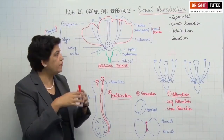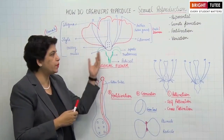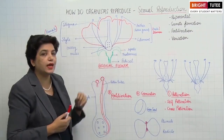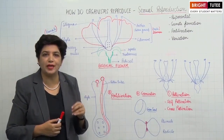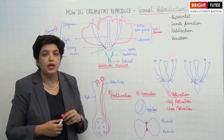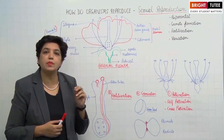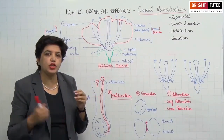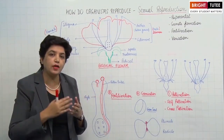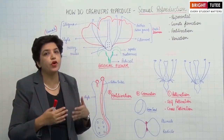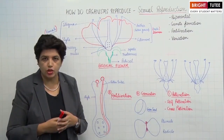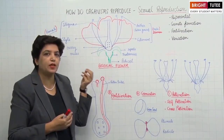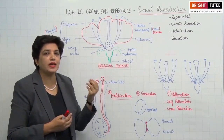The function of the sepal is to protect the flower during the bud stage, and when the flower blooms it gives support to other parts. The next layer is the colored part called the petal or corolla. These colored petals are sometimes fragrant, and their main function is to attract birds and insects for the process of pollination.